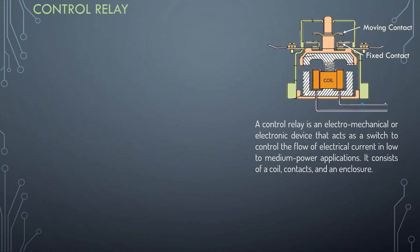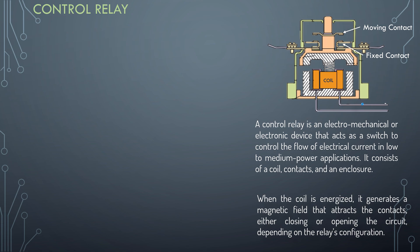A relay is an electromechanical or electronic device that acts as a switch to control the flow of electrical current in low to medium power applications. It consists of a coil, contacts, and an enclosure. When the coil is energized, it generates a magnetic field that attracts the contacts, either closing or opening the circuit depending on the relay's configuration.